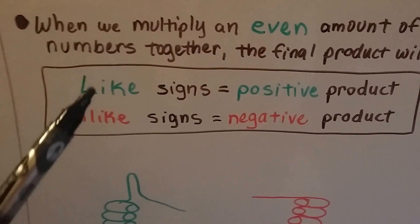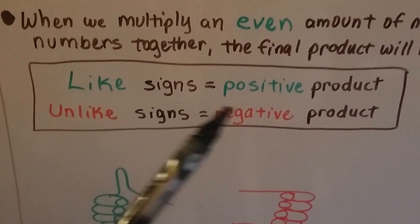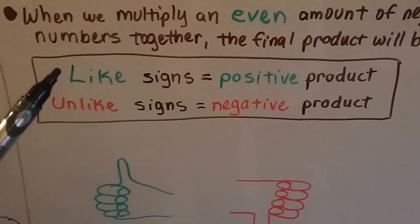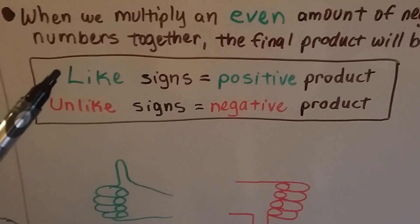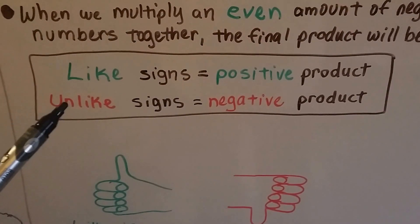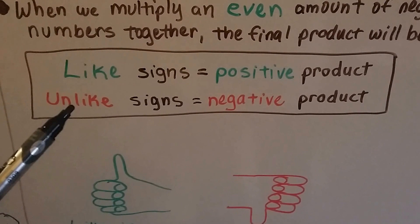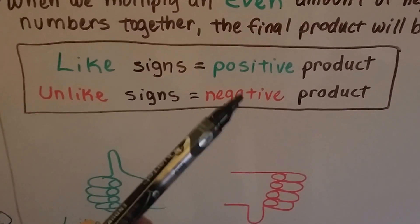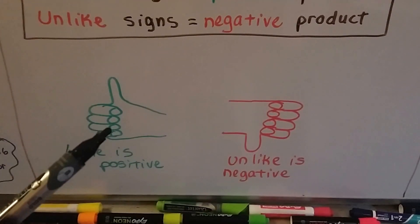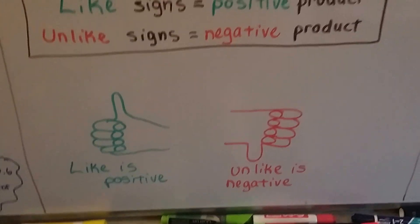Remember: if the signs are alike, you're going to have a positive product — even if they're both negative, they're alike, so the product is positive. If they're unlike — a positive and a negative, or a negative and a positive — you're going to have a negative product. Like signs give positive; unlike signs give negative.